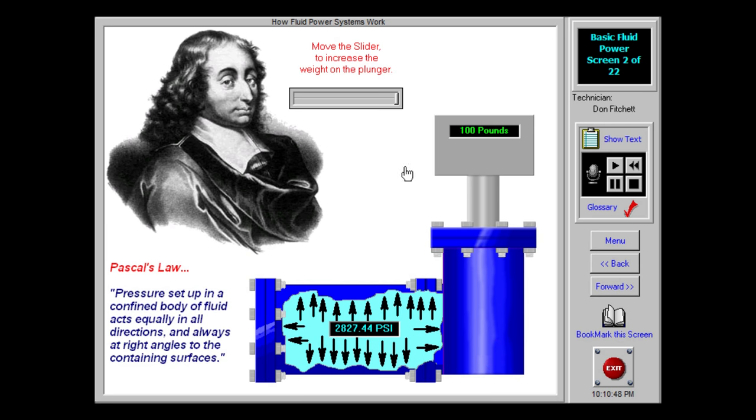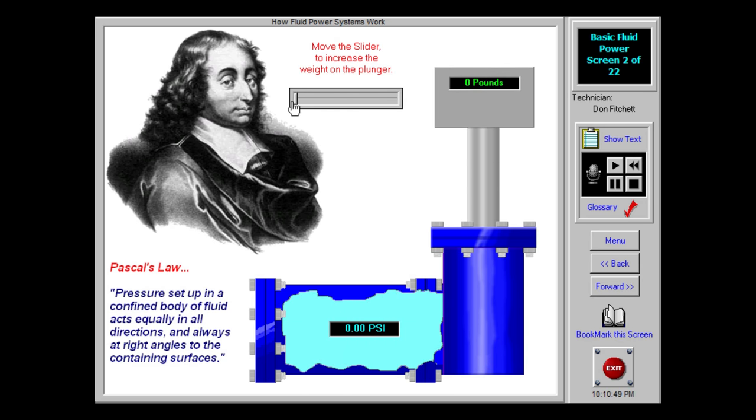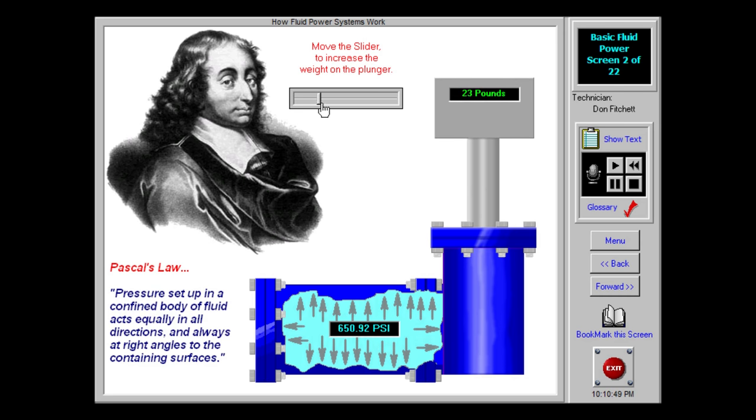During this transition, appropriate valving is added to control the direction of flow, to regulate the rate of flow, and to limit the pressure. This entire arrangement is referred to as a fluid power circuit or system.